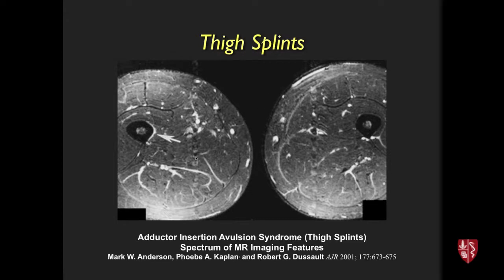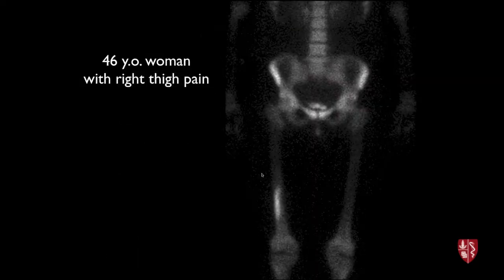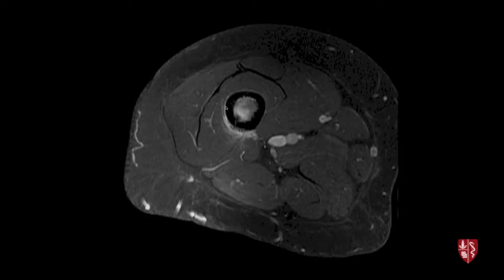An interesting case: a woman presenting with knee pain had a normal knee MRI, then a bone scan showing high activity in the right distal femur. A follow-up MRI showed geographic marrow edema with enhancement along the periosteum, raising concern for an infiltrative process such as lymphoma.